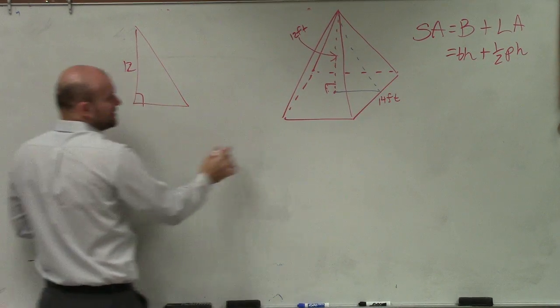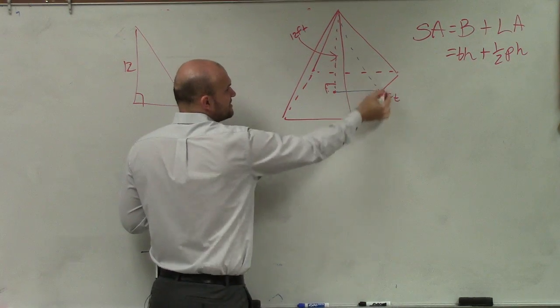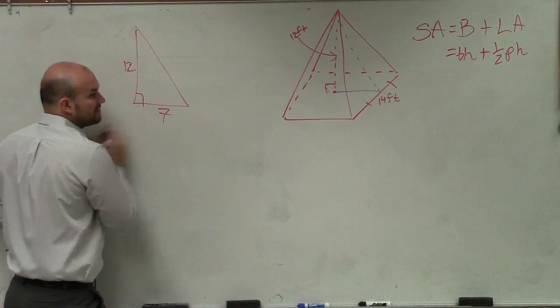That distance is 12. Now, ladies and gentlemen, if this comes directly down in the middle, that means that cuts this in half. So if this whole distance is 14, that means that side of the triangle is 7.